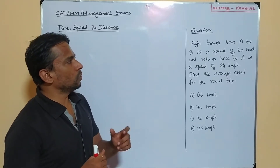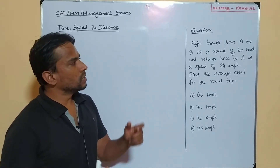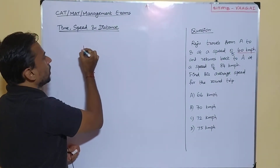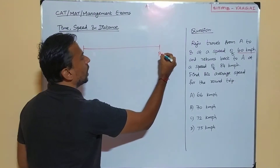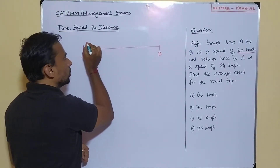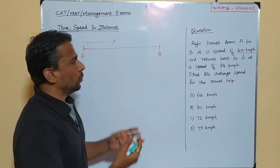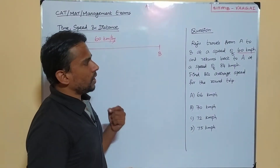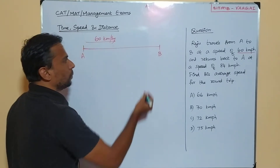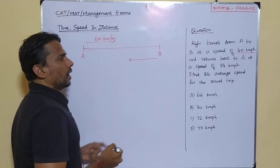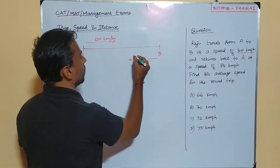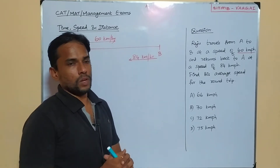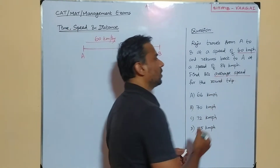Our question here is: Raju travels from A to B at a speed of 60 km per hour. There is a person Raju who is going to travel from A to B — this is point A, this is point B. This person is going to travel from here to here and the speed is 60 km per hour. He then returns back to A at a speed of 84 km per hour. Find his average speed for the round trip. So this question is based on the concept of finding the average speed.